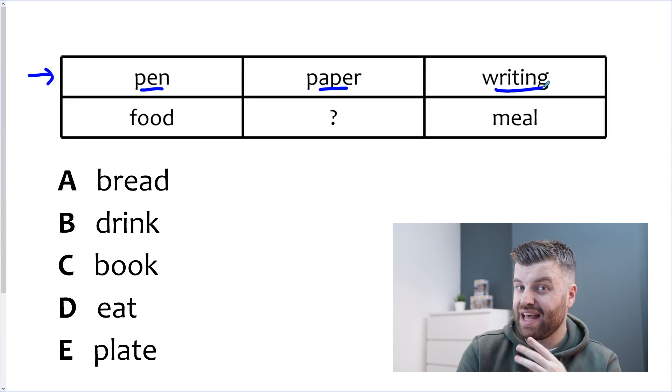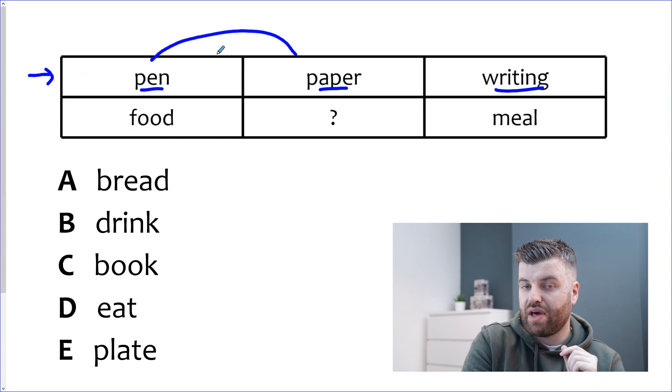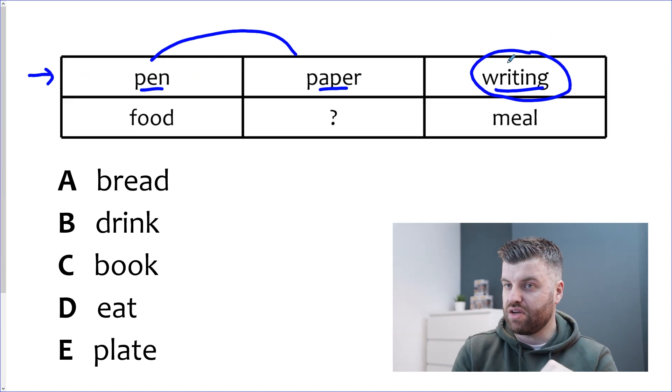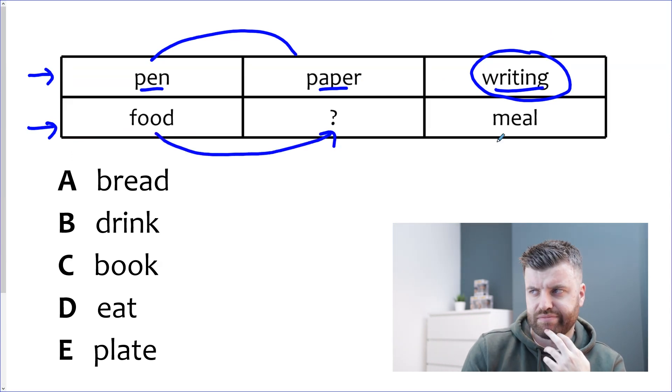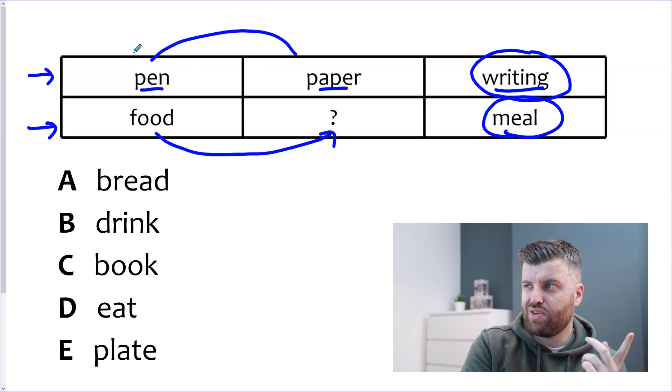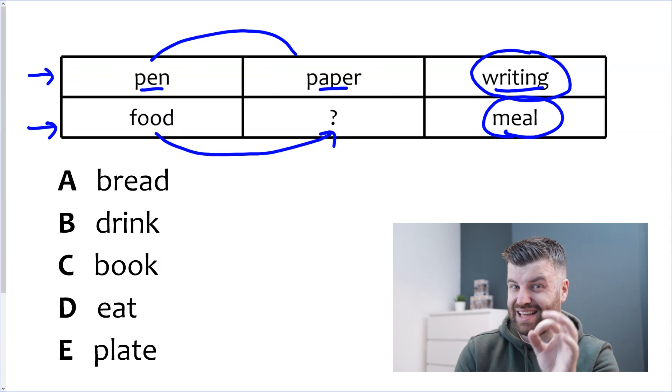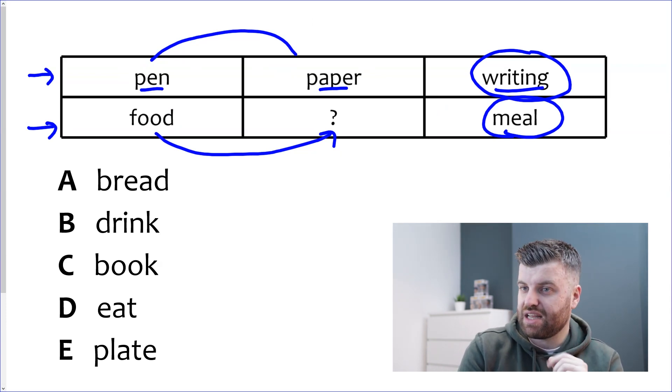The top row we've got pen, paper and writing. Now there is a link between these. I'm wondering if you can start to work out yourself and if you do have it let's see if it matches up because I'm going to tell you that the link here is that the first two words they combine together to create the last one. So you need to have a pen and paper to do some writing. So let's take a look at the bottom link here. We have you need food on something to make a meal. Well you use your pen on the paper. What do you do with your food? Where do you put it? You put it on something to create a meal. That is the link. It's the same way for the top as the bottom row.